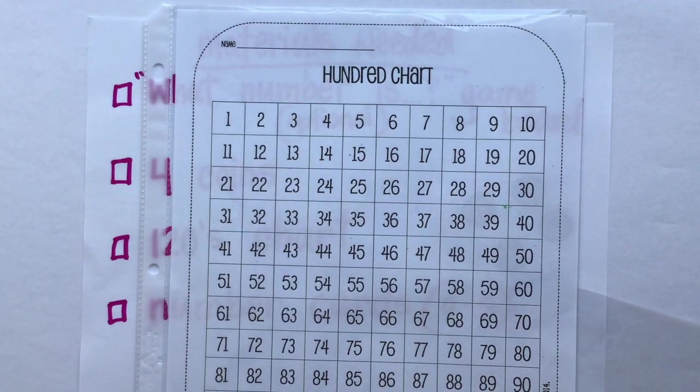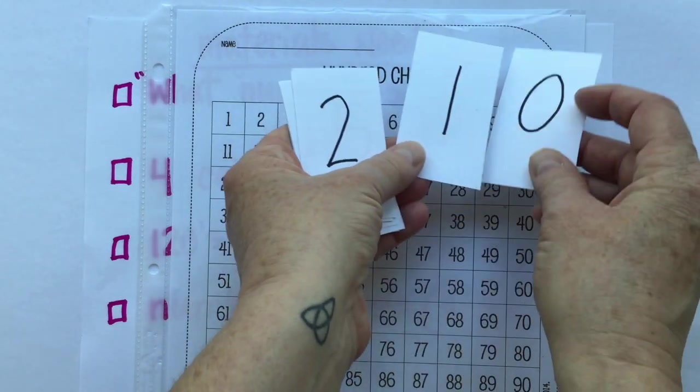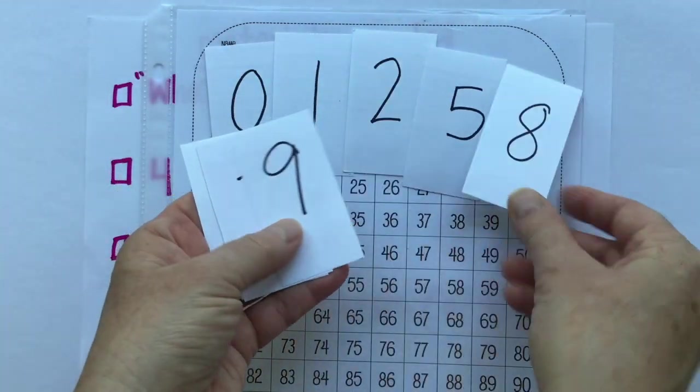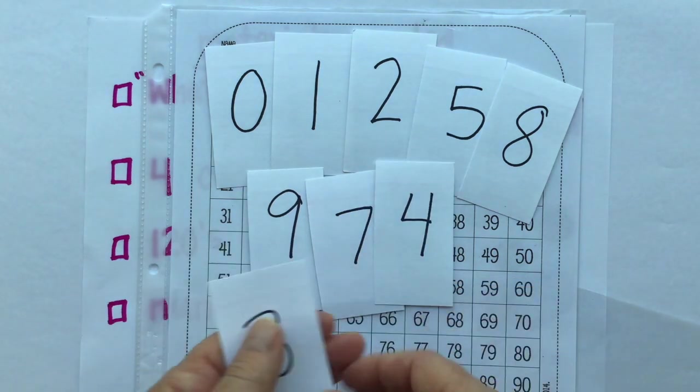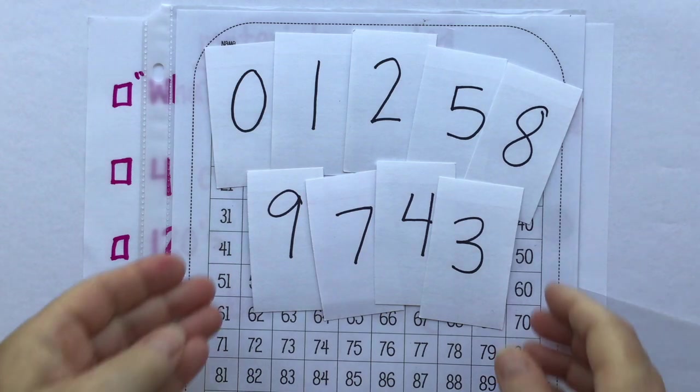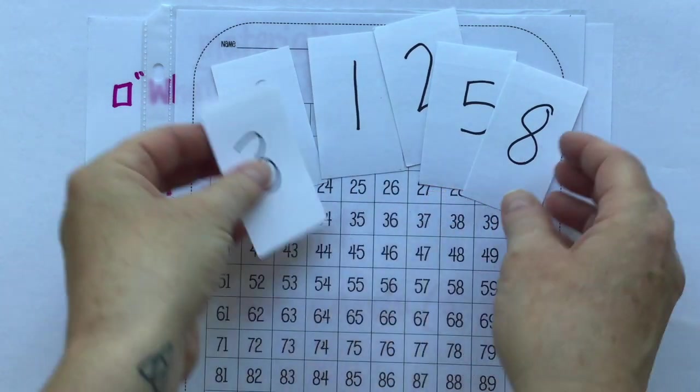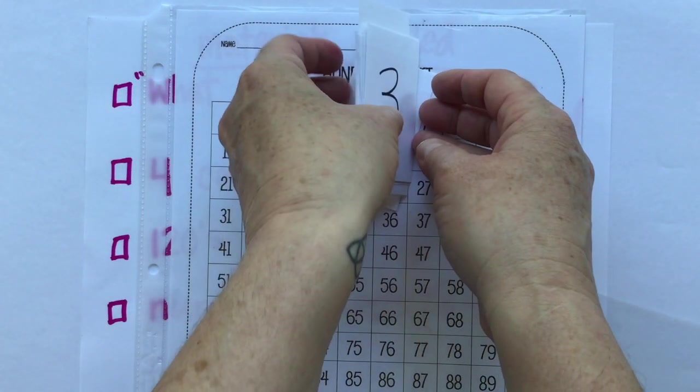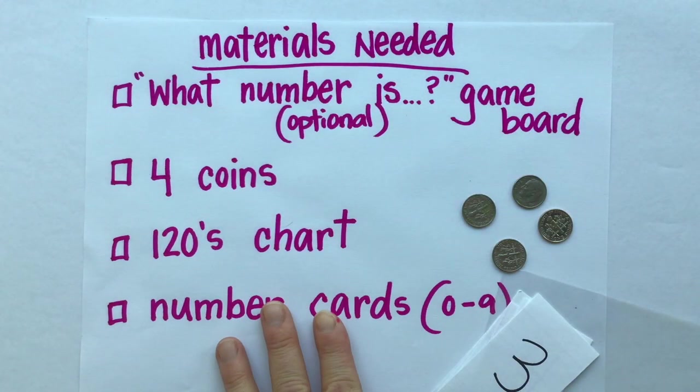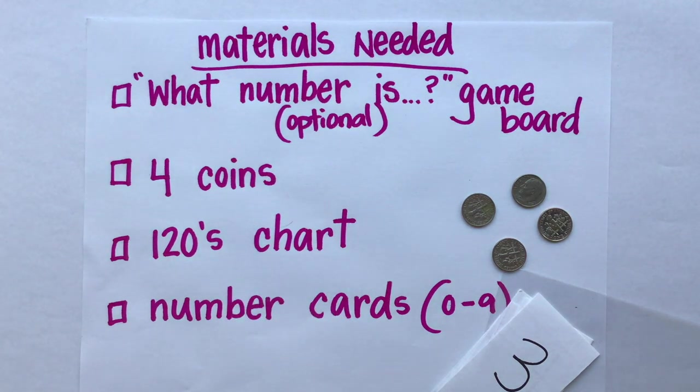And lastly, you're going to need your number cards that we created several lessons ago. These number cards, you just need zero to nine on your number cards. So stop the video right here and get the materials that you see on your materials needed chart and come back when you have everything you need.